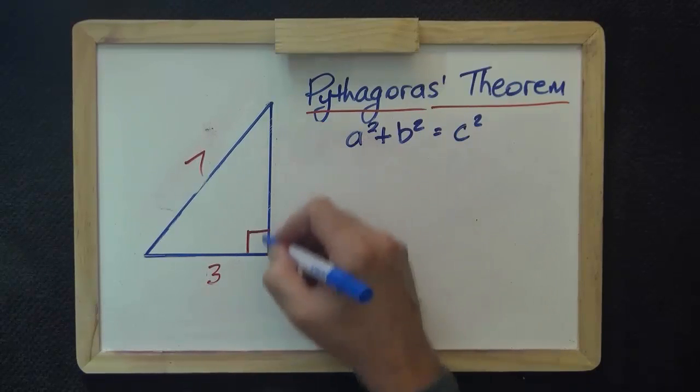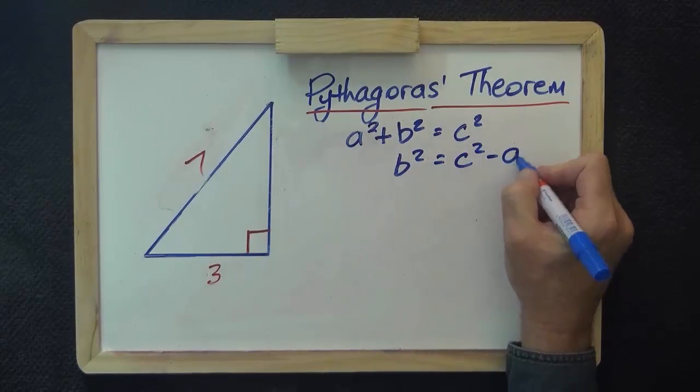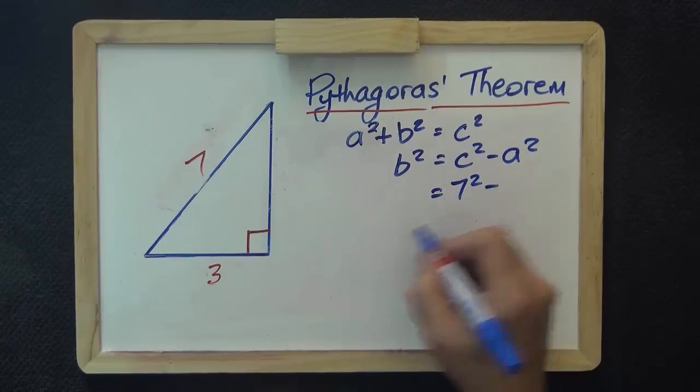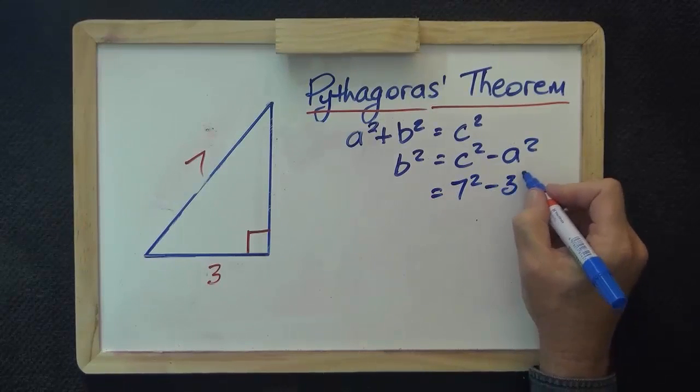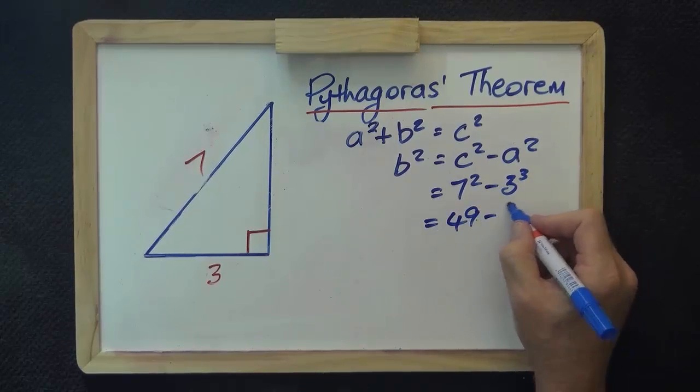Again, we'll look for side b, so we can say b² = c² - a². c squared is 7 squared minus 3 squared. It's 49 minus 9 equals 40.